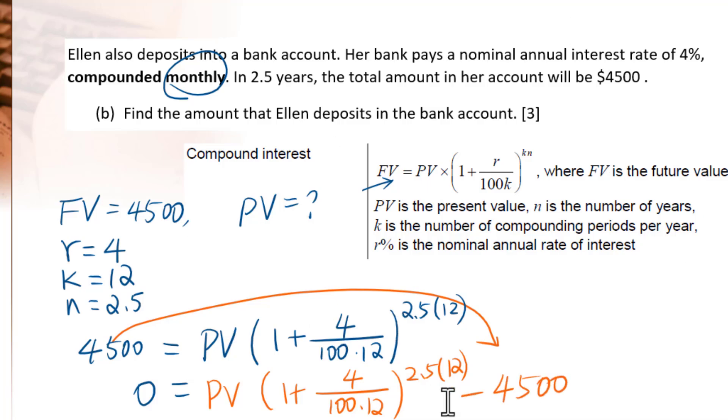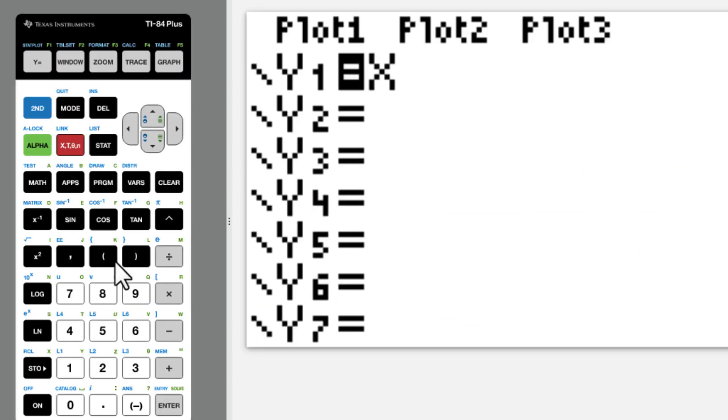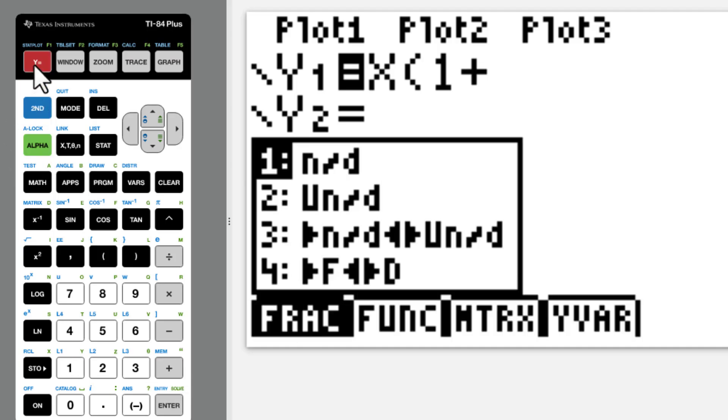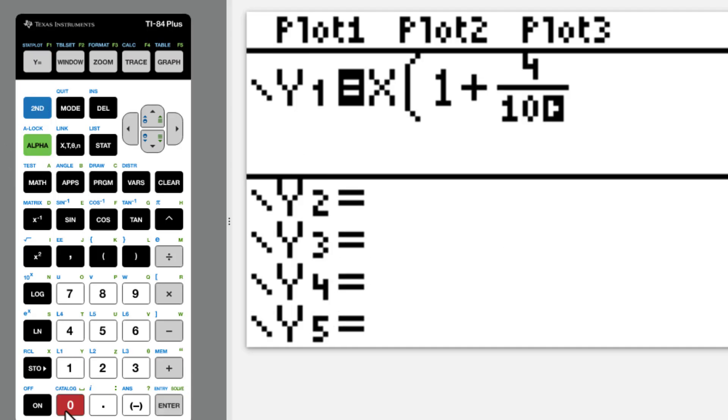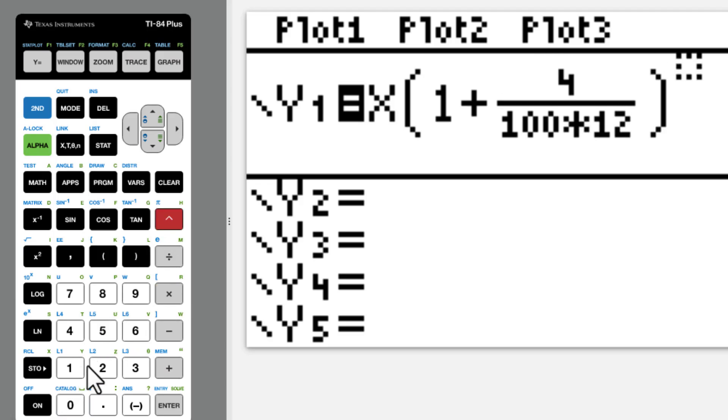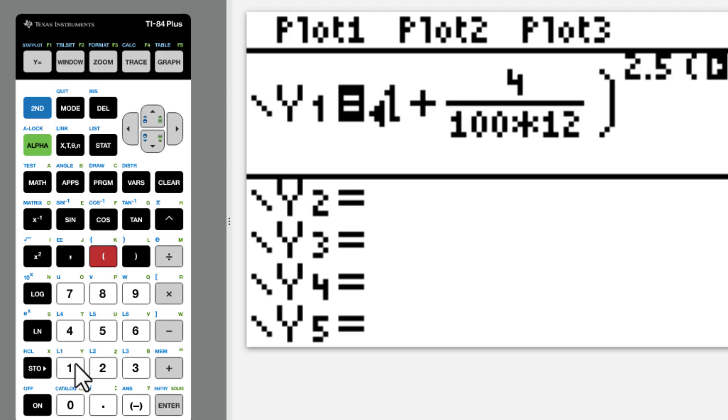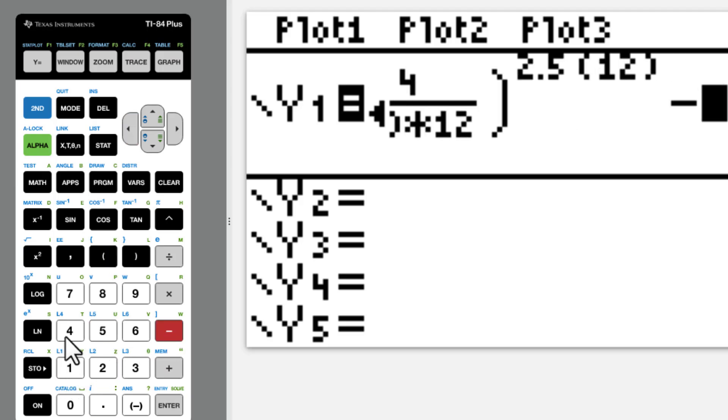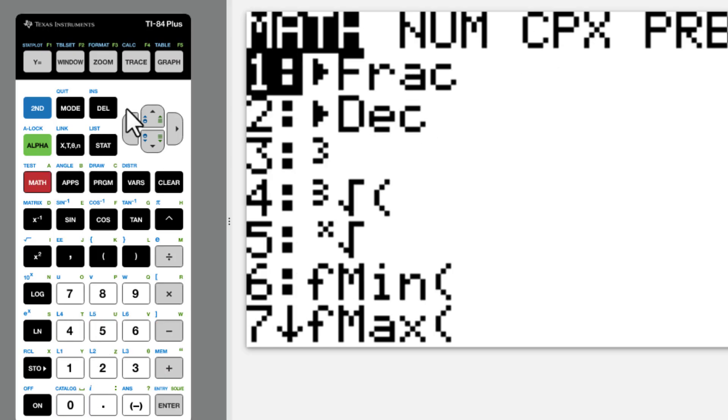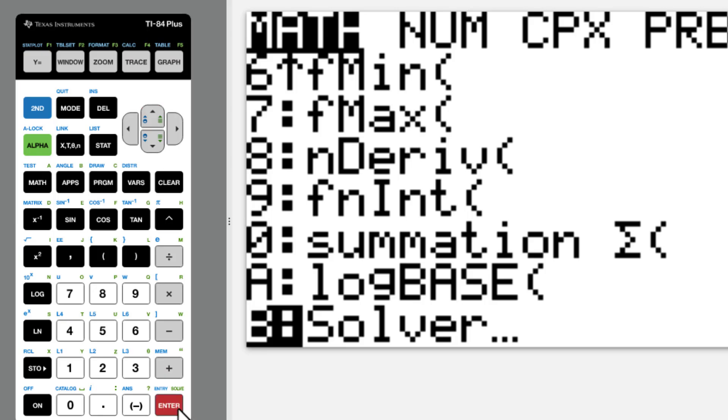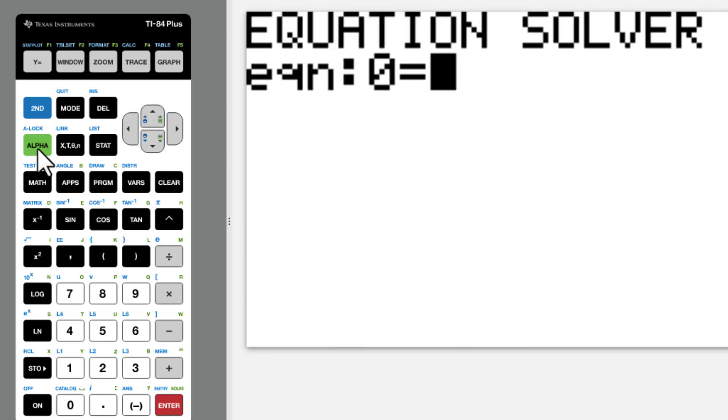Since this equation is very complicated, we need to go to Y1 first. X for PV. X times 1 plus alpha Y equals 4 over 100 times 12, power 2.5 times 12, minus 4500. Math, upper arrow, Solver, Alpha, Trace.